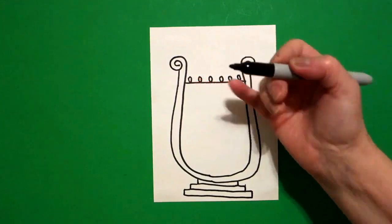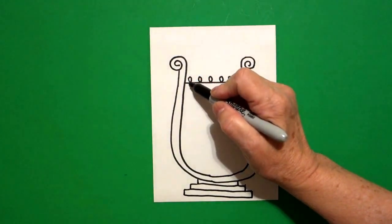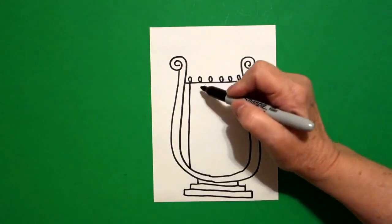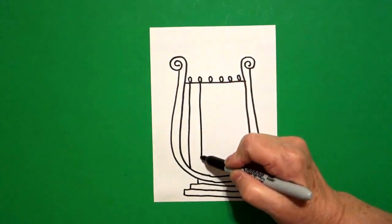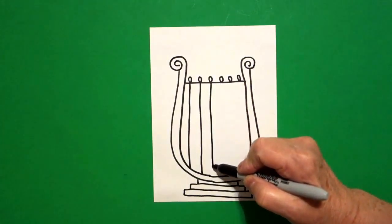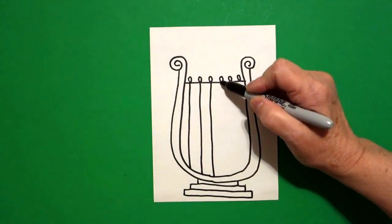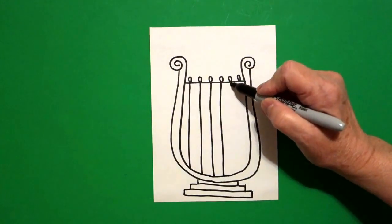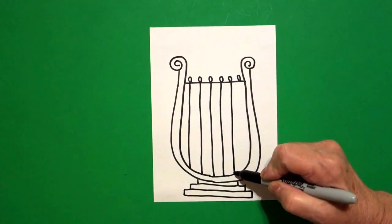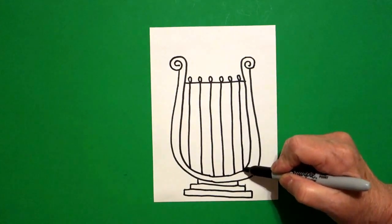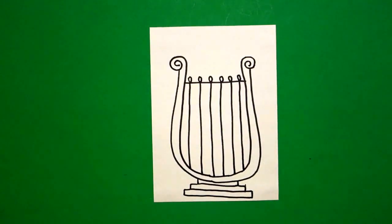Now, we're going to come on the inside and from each loop, we're going to draw straight line down, connect, one, straight line down, two, straight line down, three, straight line down, four, straight line down, five, straight line down, six. So, like I said, some of you might have more straight lines, some of you might have less.